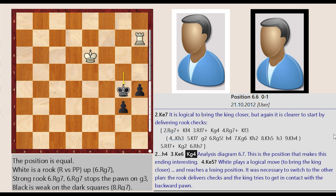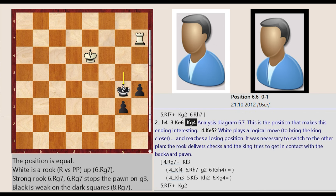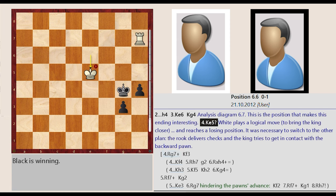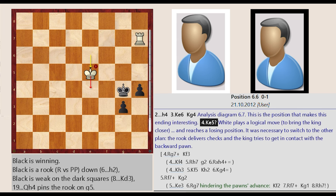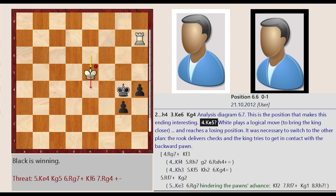h5 h4, King e7 e6, King g5 g4. Analysis diagram 6.7. This is the position that makes this ending interesting. King e6 e5. White plays a logical move to bring the king closer and reaches a losing position. It was necessary to switch to the other position with the plan: the rook delivers checks and the king tries to get in contact with the backward pawn.